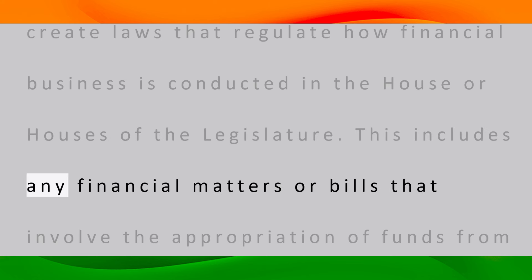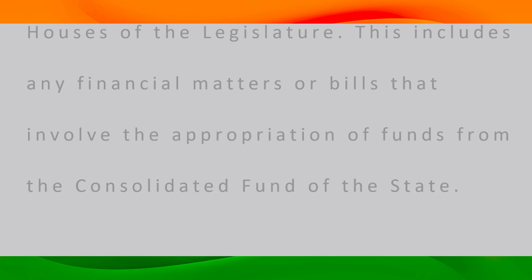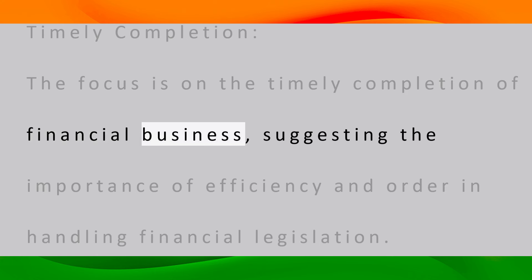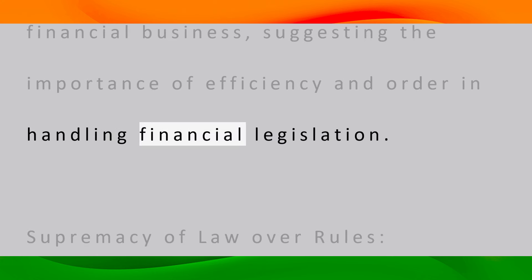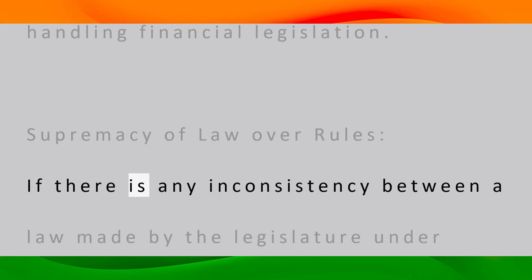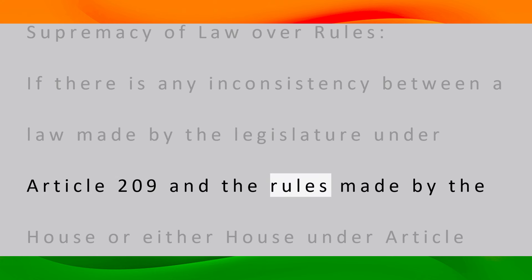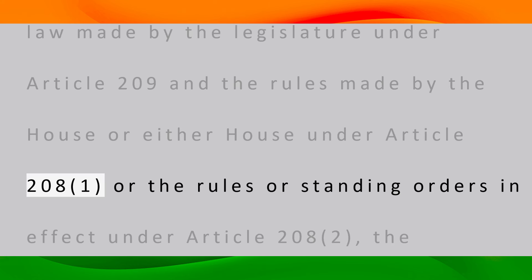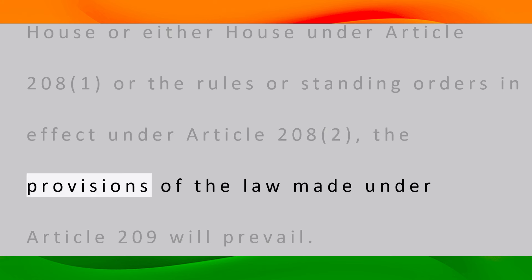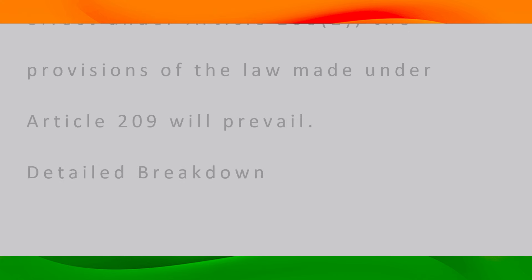This includes any financial matters or bills that involve the appropriation of funds from the Consolidated Fund of the State. The focus is on the timely completion of financial business, suggesting the importance of efficiency and order in handling financial legislation. If there is any inconsistency between a law made by the legislature under Article 209 and the rules made by the house or either house under Article 208(1), or the rules or standing orders in effect under Article 208(2), the provisions of the law made under Article 209 will prevail.